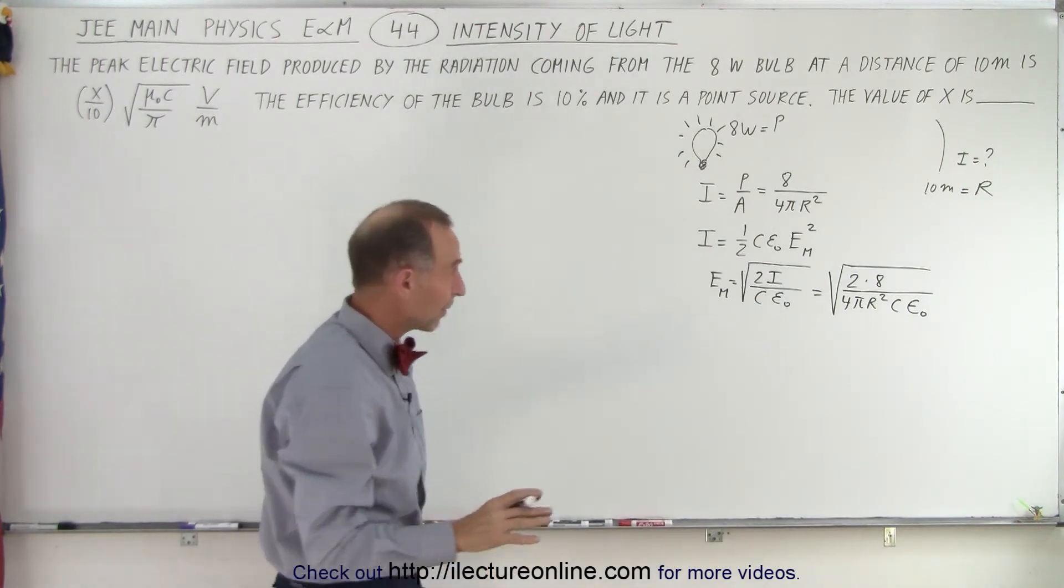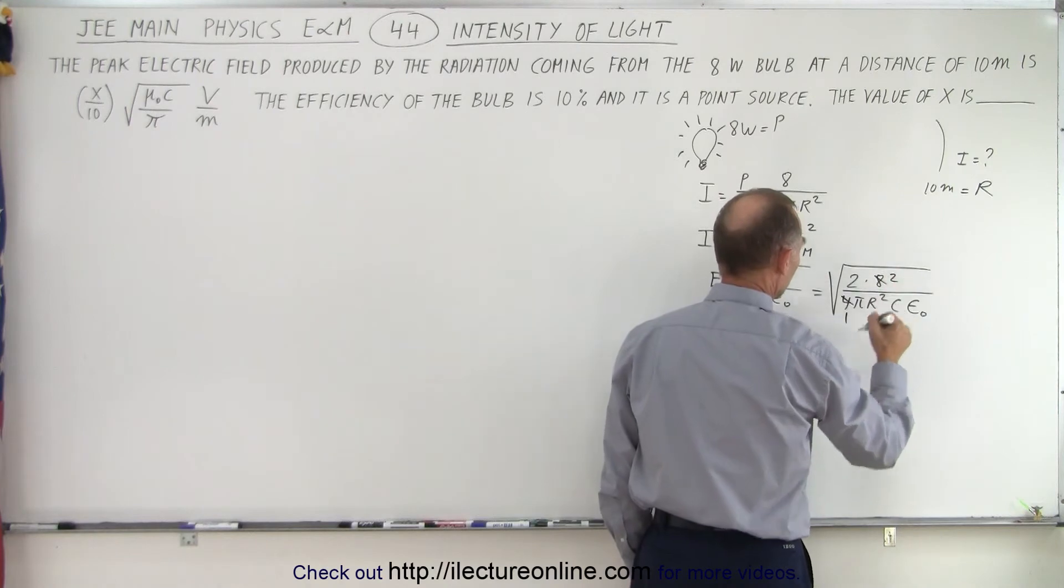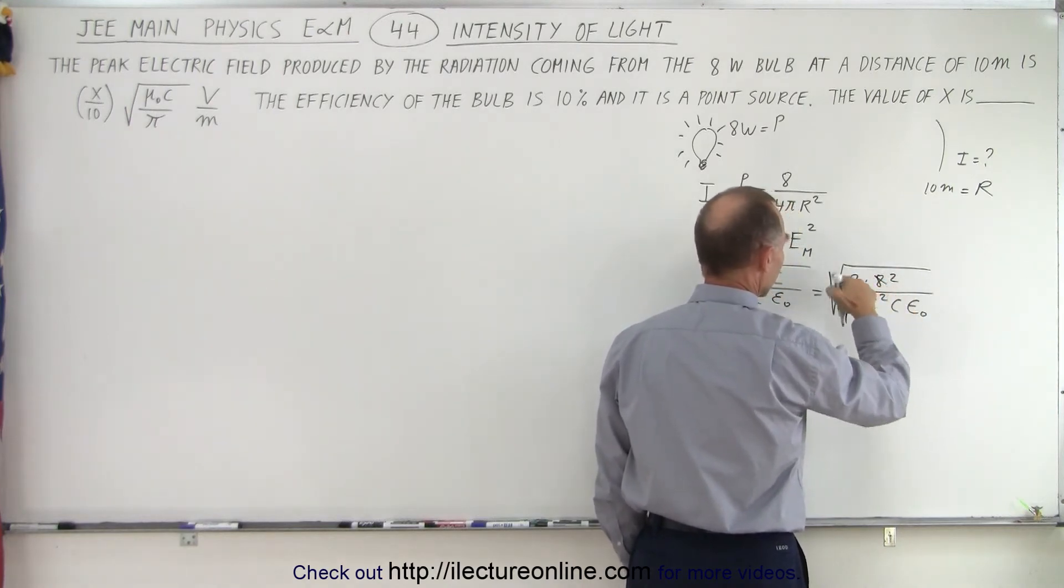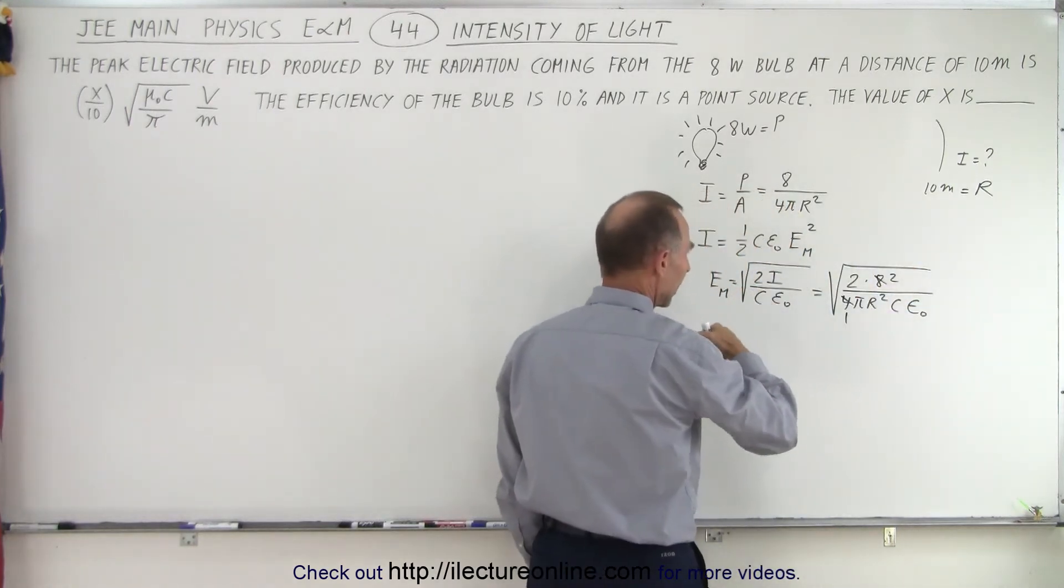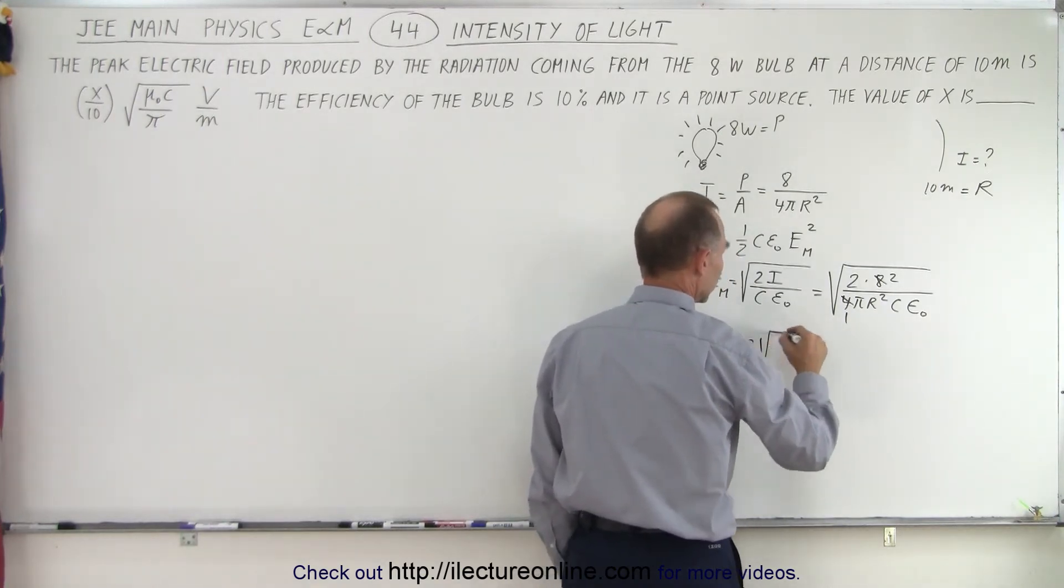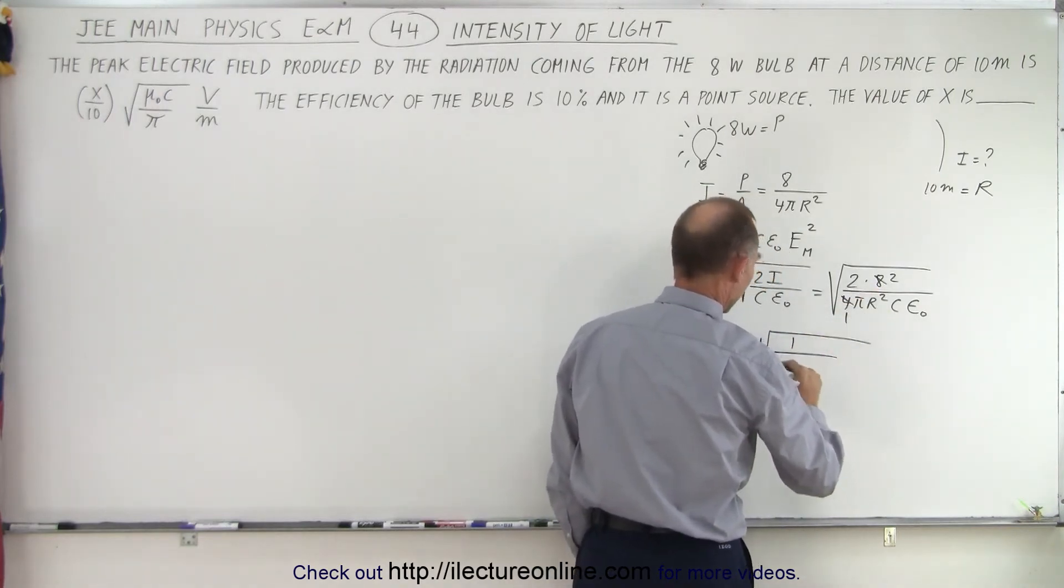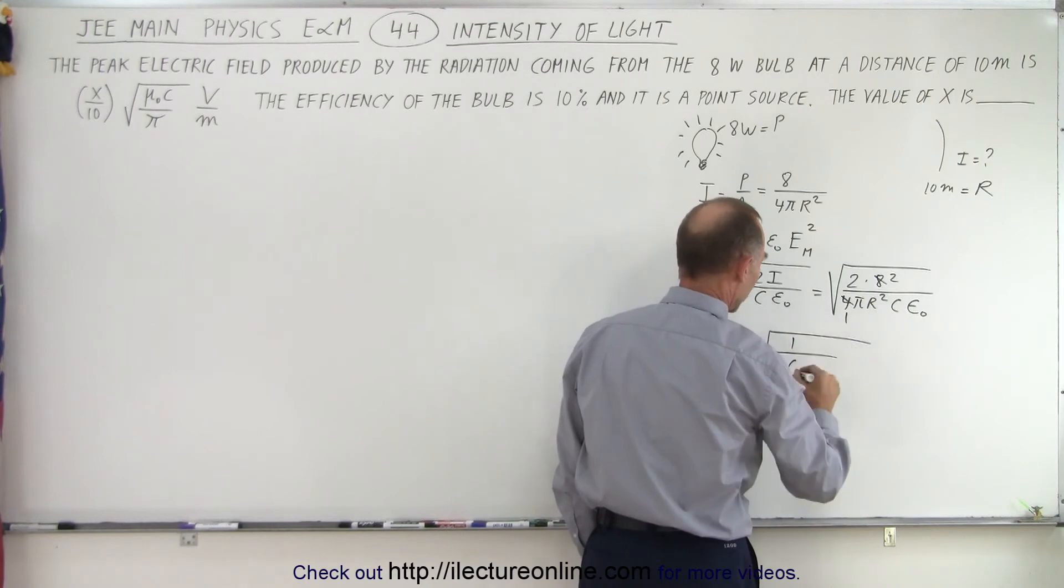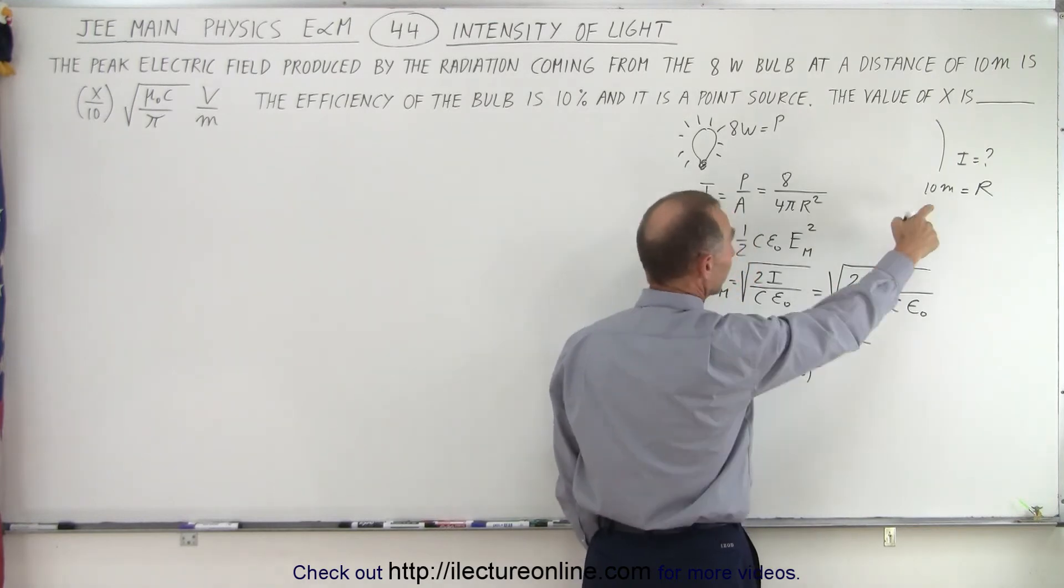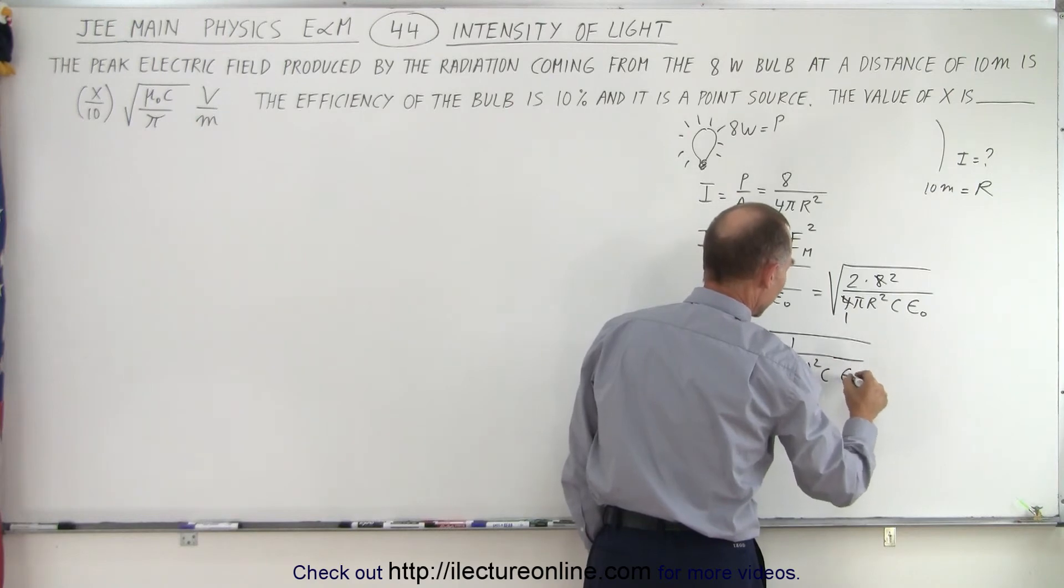So now at least we can simplify things just a little bit. This 4 becomes a 1, this 8 becomes a 2, and we have 2 times 2 underneath the radical that can be moved out. And so that becomes the maximum field intensity is equal to 2 times the square root of, so here now we have 1 in the numerator. We have pi times r squared, which is 10 squared because we're 10 meters, times c times epsilon sub naught.